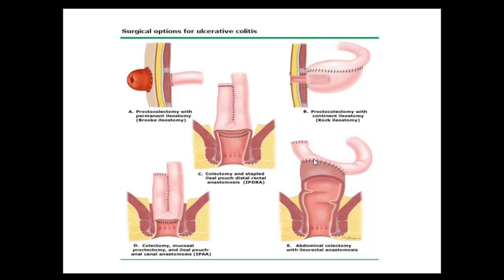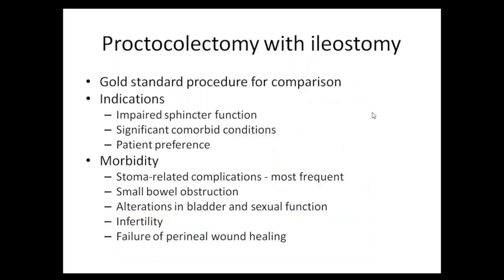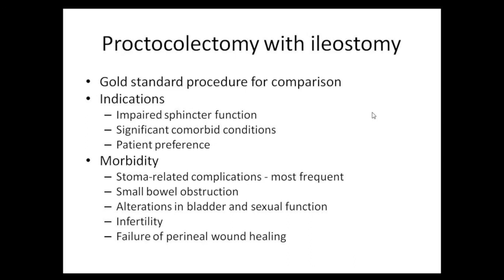Ileorectal anastomosis is performed in very selective ulcerative colitis patients and some cases of indeterminate colitis. The gold standard procedure for comparison is proctocolectomy with end ileostomy, as it has the least complication rates. Indications include impaired sphincter function, significant comorbidities, and patient preference including young patients wanting to preserve future fertility. Morbidity includes small bowel obstructions and mild alterations in bladder and sexual function due to pelvic dissection.